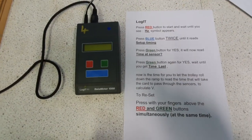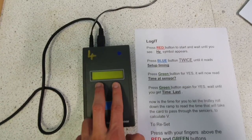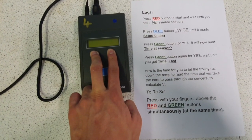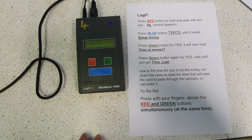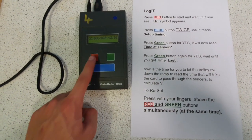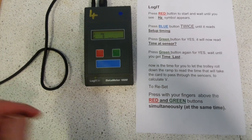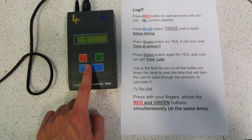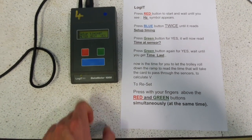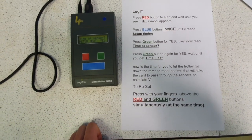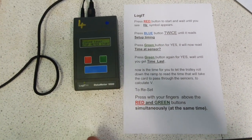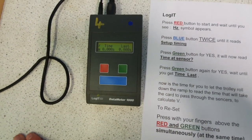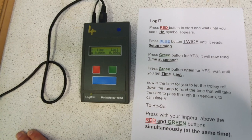What do we do first? To reset it, we press above the green and the red buttons. Next thing, you need to press the red button until the Hertz symbol appears. Press the blue button twice. And then press the green button for yes, and then press the green button for yes again. And we are all set up. That's what you need to do each time you change your mass on the pulley.